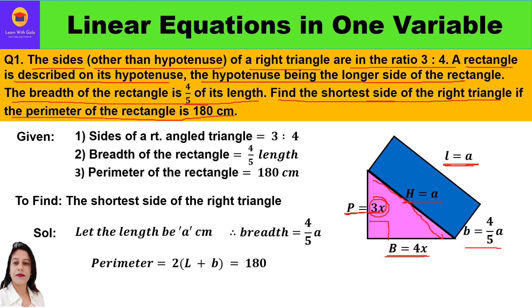What is given to us? We are given the perimeter of this rectangle. Perimeter is the length of the boundary — length plus length, breadth plus breadth. The sum of all these is the perimeter and it is 180 centimeters. From this perimeter of the rectangle, first we will find the length and the breadth. Then this length of the rectangle becomes the hypotenuse. In the right-angled triangle, we can apply the Pythagoras theorem to find the perpendicular and base, and the perpendicular is our answer.